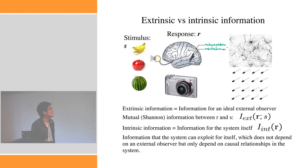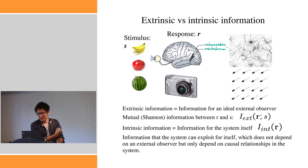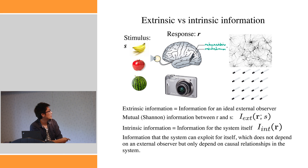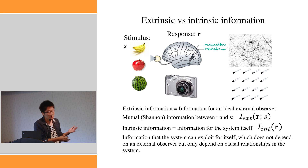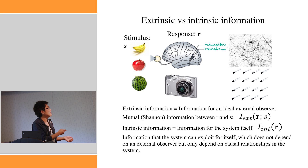I'll start from probably the most important concept in IIT: the distinction between extrinsic versus intrinsic information. IIT states that a system must generate information to generate consciousness. When IIT says information, it refers to intrinsic information. Let's compare the brain and a digital camera, which consists of millions or billions of photodiodes. When we consider just extrinsic information — the information for some ideal external observer — we quantify mutual information between some external stimulus and some response of the system.